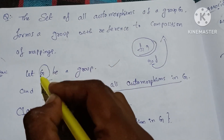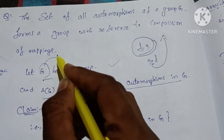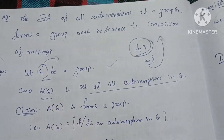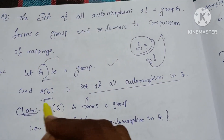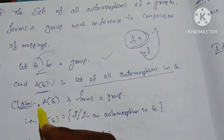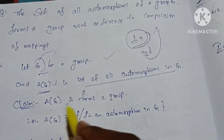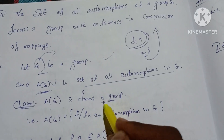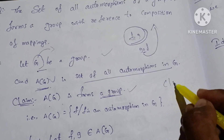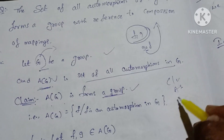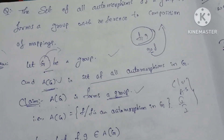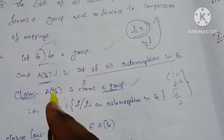Let G be a group. A(G) is the set of all automorphisms in G. So we can prove A(G) is a group. If we have the four laws — closure, associative, identity, inverse — we can prove that. In A(G), there is an element F, where F is an automorphism in G.